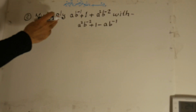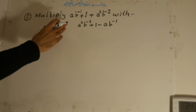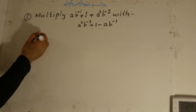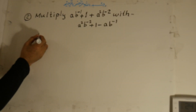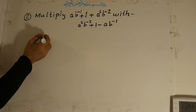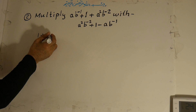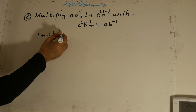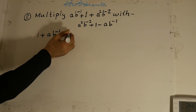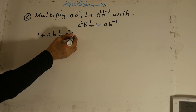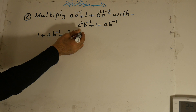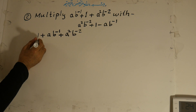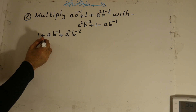We arrange this according to a. We write 1 plus a b to the power of negative 1, plus a to the power of 2 b to the power of negative 2. Now we multiply this with the second trinomial, that is positive 1, plus a...